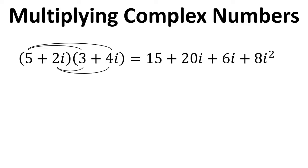Now we need to simplify this. We still have 15, but we can add the 20i and the 6i to give us 26i. And i squared is minus 1, so 8 times minus 1 is minus 8. So the overall number is 7 plus 26i, because 15 minus 8 equals 7.